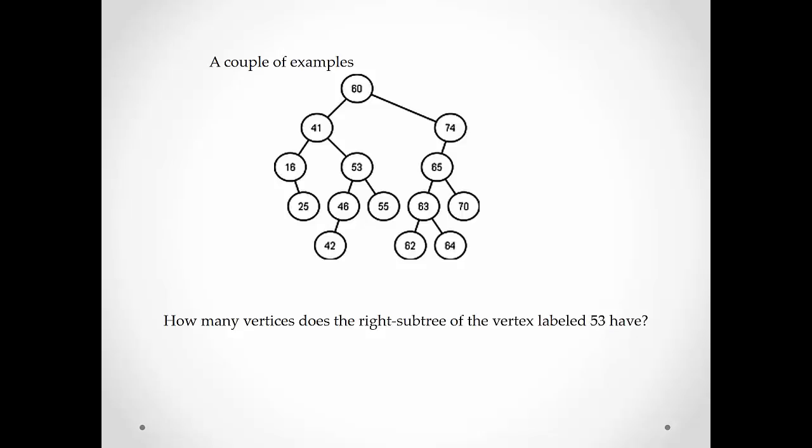How many vertices does the right subtree of the vertex labeled 53 have? Recall that the vertex labeled 53 was the right child of 41. Looking at vertex 53, how many vertices does its right subtree have? It only has one, and that is 55.